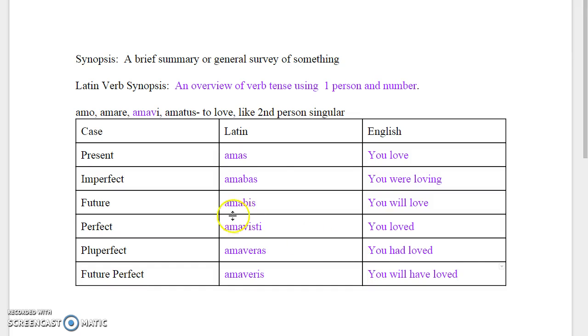Okay so here we have it: amas you love, amabas you were loving, amabis you will love, amavisti you loved, amaveras you had loved, and amaveris you will have loved. So that is a verb synopsis. It's very simple, straightforward, just gives us an overview of each of the tenses.